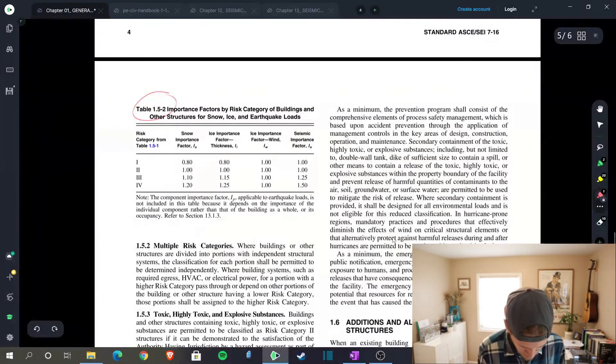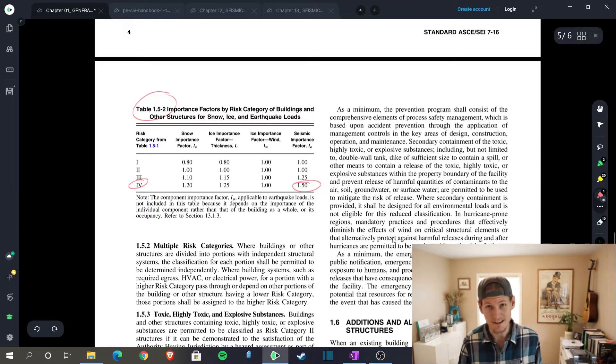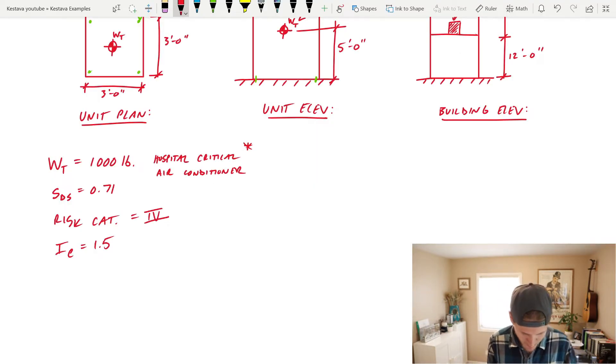design that component as a risk category 4 criteria. Table 1.5-2, risk category 4 means that we have an importance factor of 1.5. We're going to need that as well. We've got those tidbits of information.